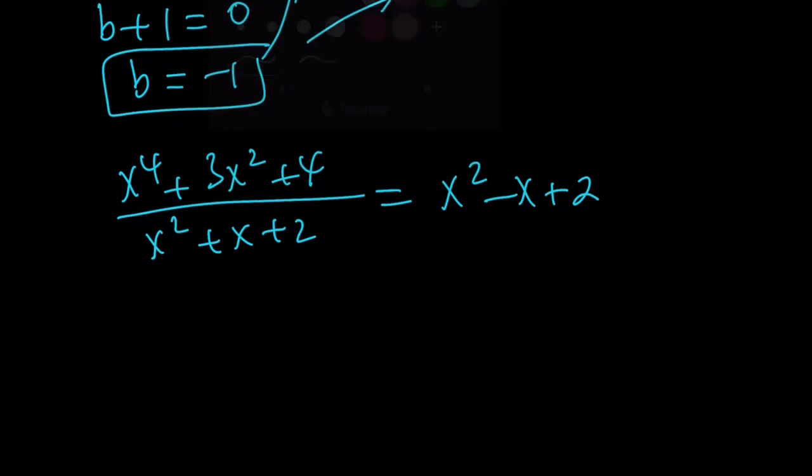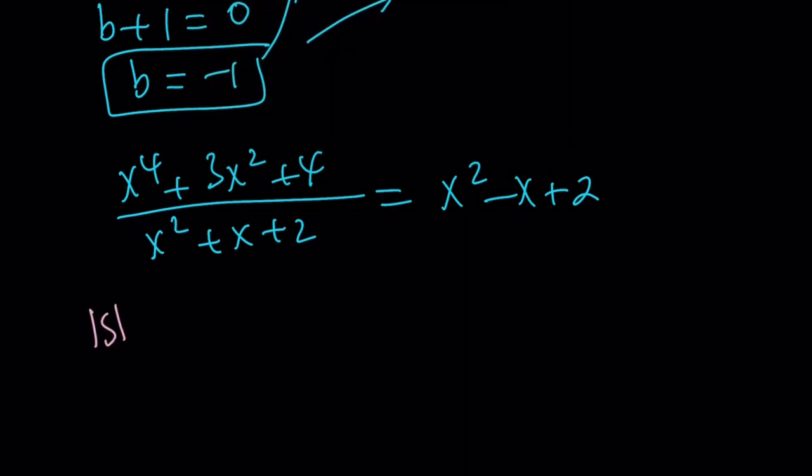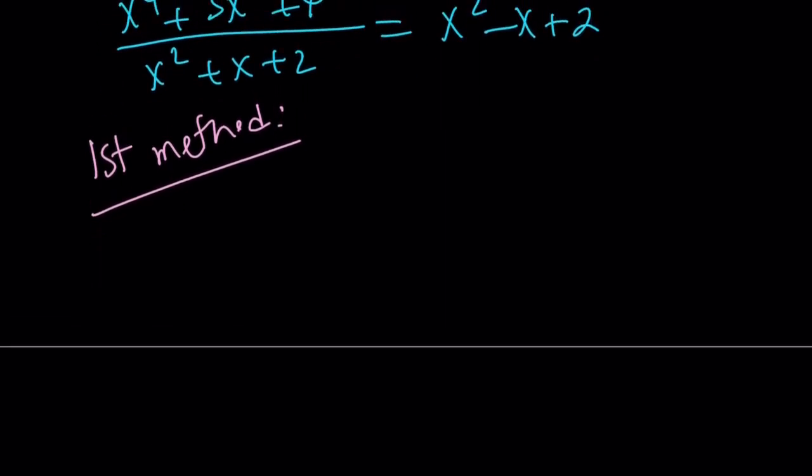Let's go ahead and talk about the first method now, because we did the second method first, right? Okay, first method. The first method is called no pain, no gain. So we're going to be doing long division. So here's how it works.